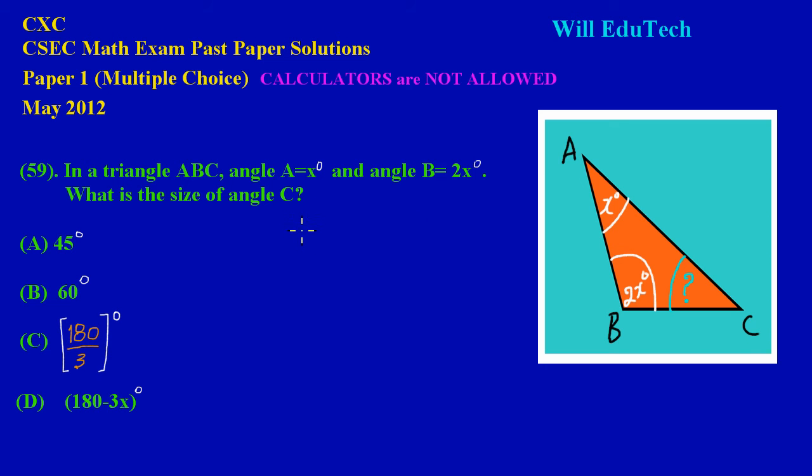Given that fact, I can simply write an equation that represents this information. I can say angle A plus the angle at B plus my angle at C must be equal to 180 degrees. They gave us some expressions, so we can quickly substitute. The angle at A is x degrees.